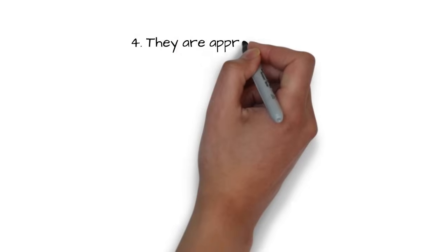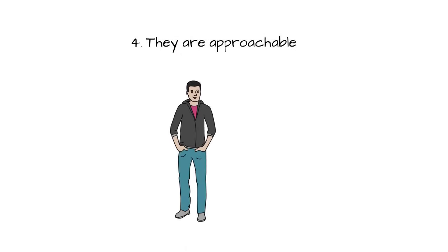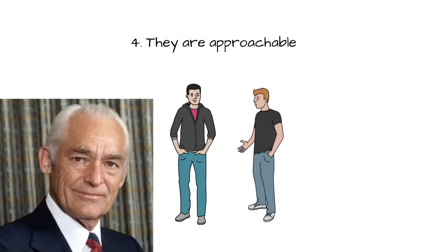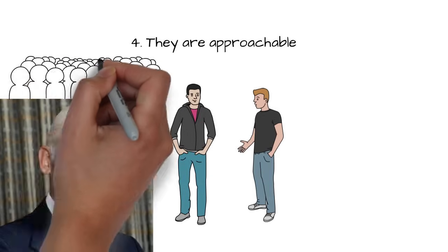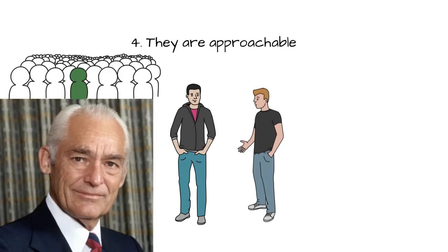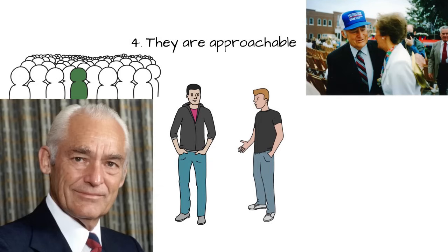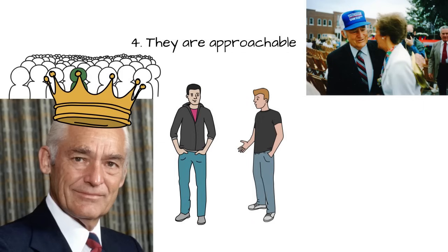Number four, they are approachable. A great leader is one who their teammates could see themselves approaching whenever they have a concern, or when they simply need someone to discuss things with. When Sam Walton opened over a dozen Walmart stores, he was still available to privately talk to any one of his thousands of employees. Was this the reason Sam Walton was so successful? We can't say for sure, but he is a prime example of someone who's approachable, and it so happens he's also one of the most notable leaders in the last three decades.